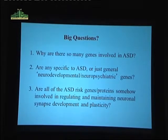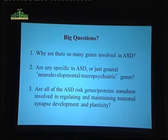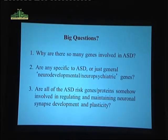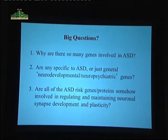Are there any genes specific to autism itself, or just general neurodevelopmental neuropsychiatric genes? The PTCHD1 story so far suggests it could be an autism risk gene, but all the others are going cross-disorder. It'll be important to determine population frequencies to enable proper clinical genetic interpretations. And are all autism risk genes somehow involved in regulating neuronal synapse development and plasticity? There could be metabolic proteins involved as well — we'll have to wait and see.